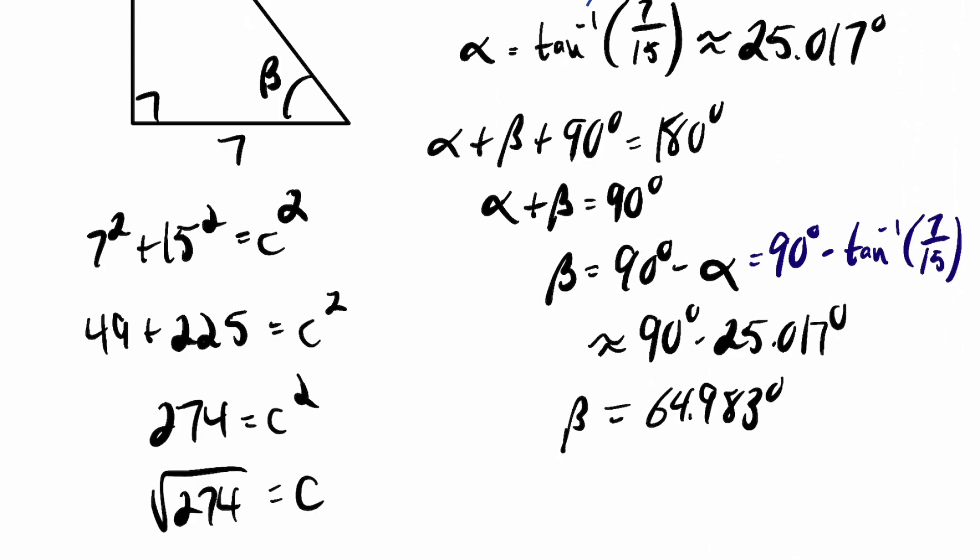So we found alpha, we found beta, we found C. So we've solved the triangle. We found all the features that we were not given.